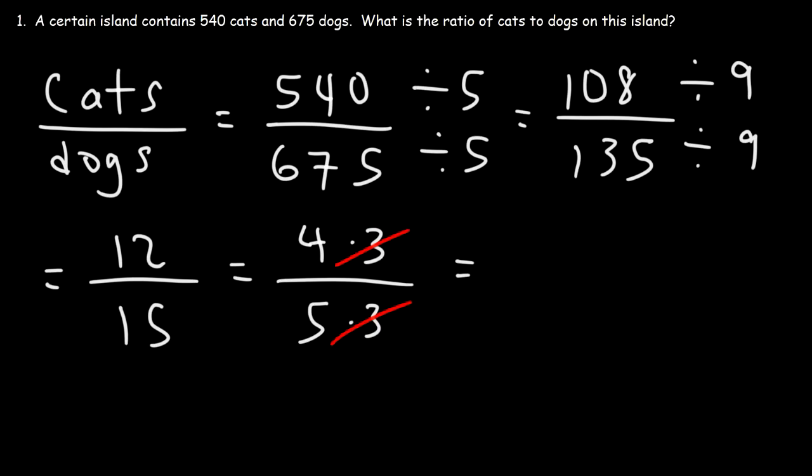So the ratio of cats to dogs is 4 to 5, or we can write it like this using a colon. So that's it for this problem.